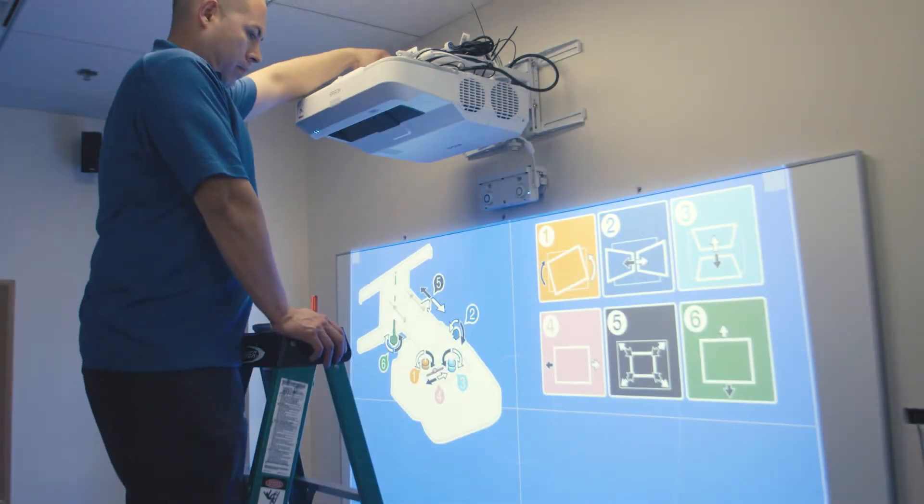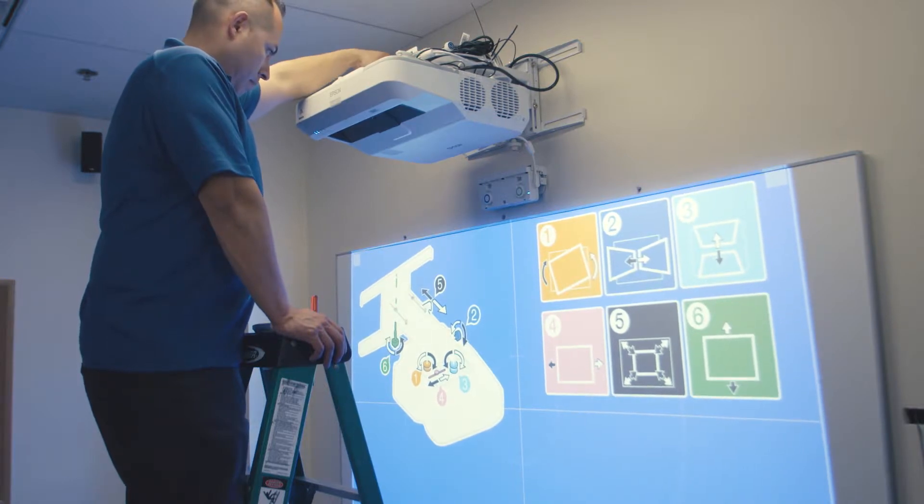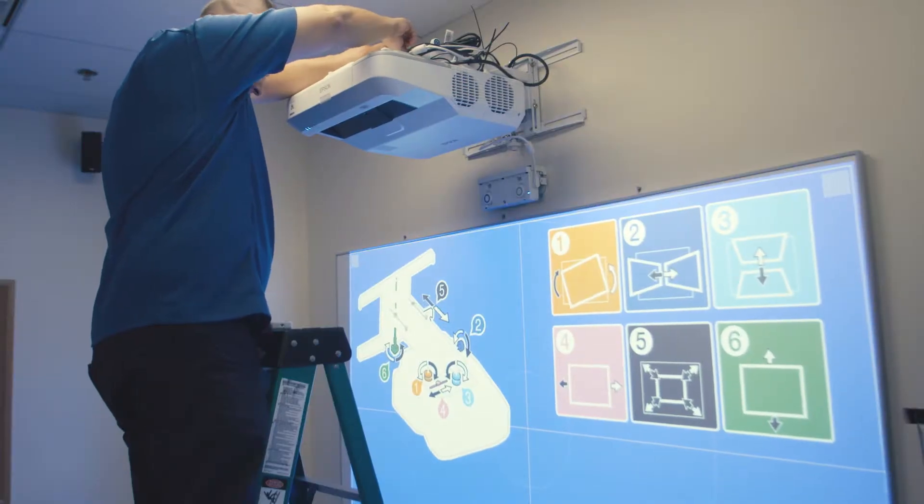With an image projected, it is time to make adjustments in order to get the image to fit the board. You can push in or pull out the mount arm in order to get the image size to fit the whiteboard.